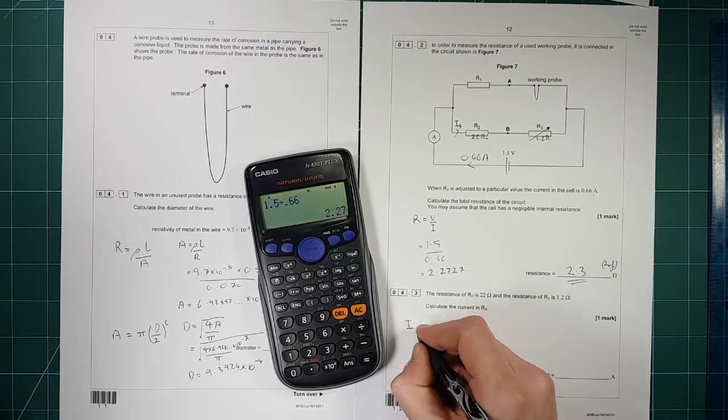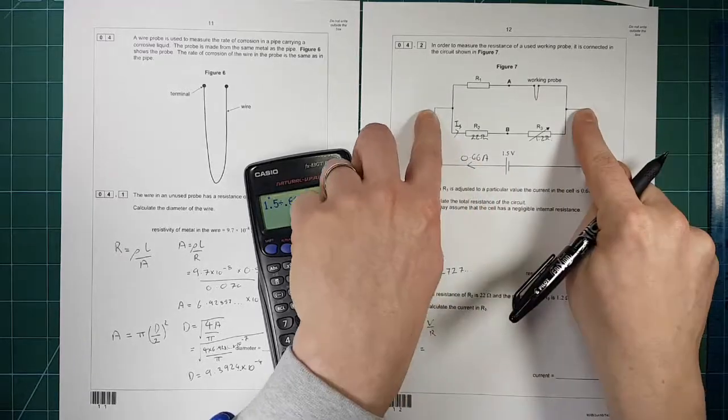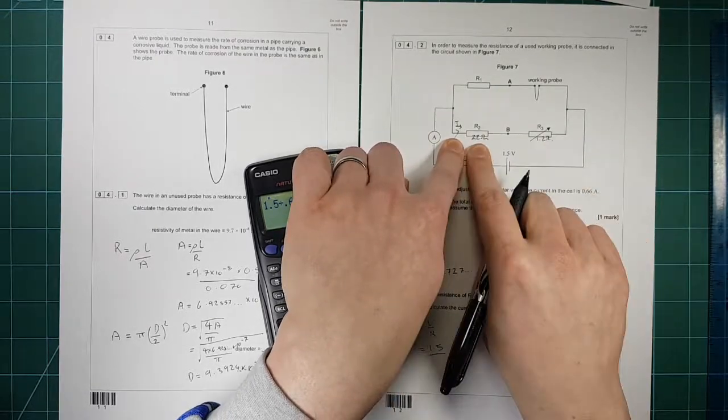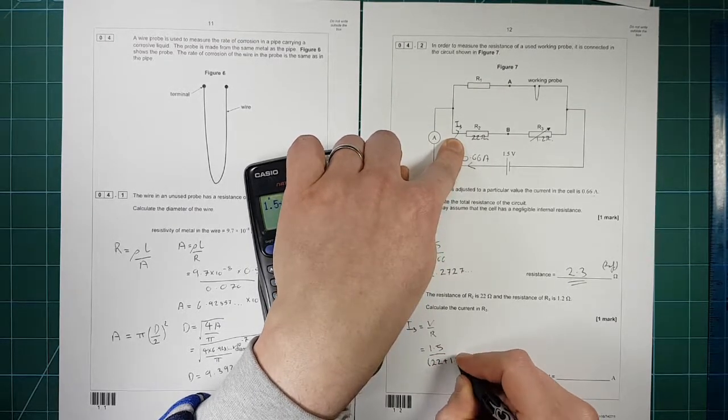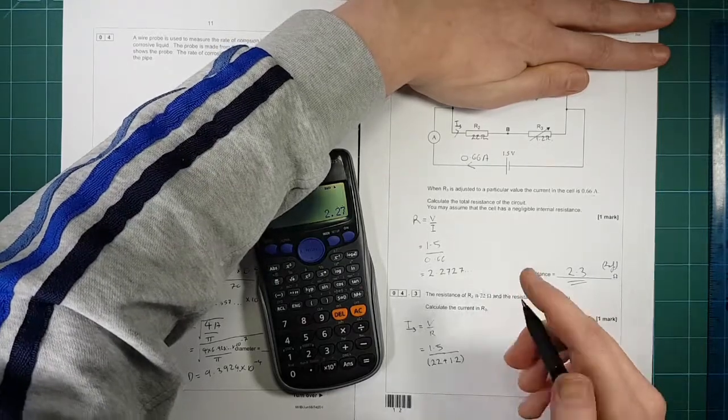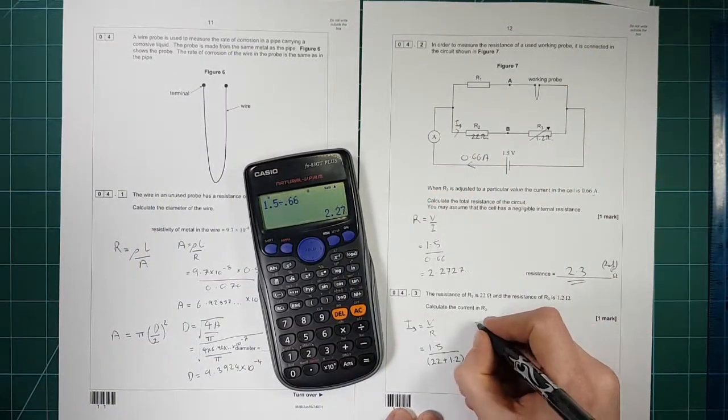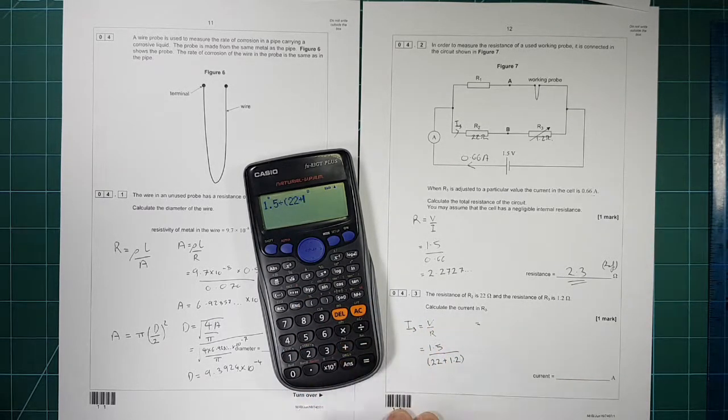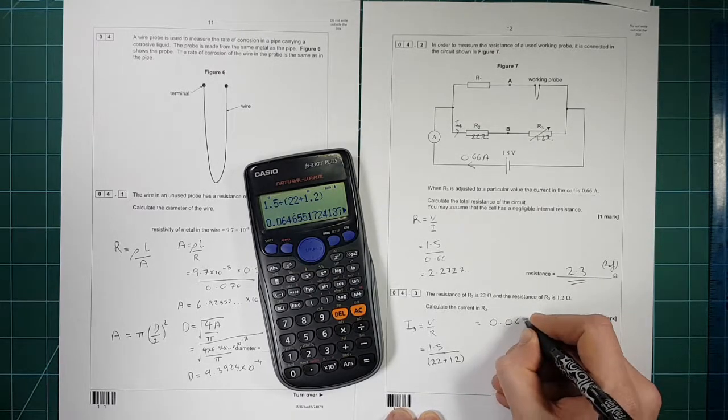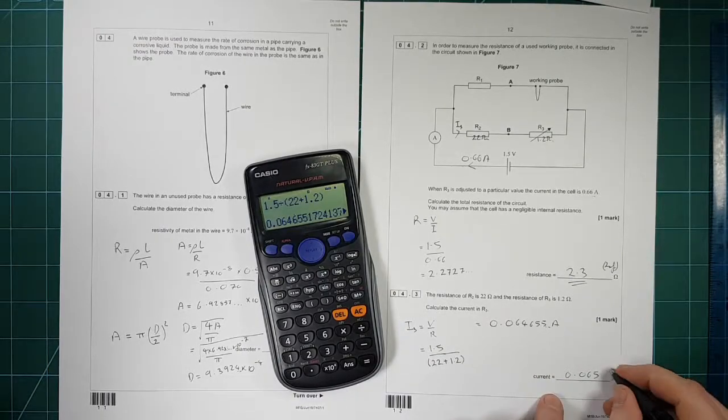So we'll use Ohm's law again. I3 is equal to V divided by R. So the voltage across this branch here is still 1.5 volts, divided by the resistance of this branch. This branch here has two resistors in series. To find the resistance, you add the two resistors together because they're in series with one another. So we have 1.5 divided by 22 plus 1.2 gives us 0.064655 amps. So round that will give us 0.065 amps to 2SF.